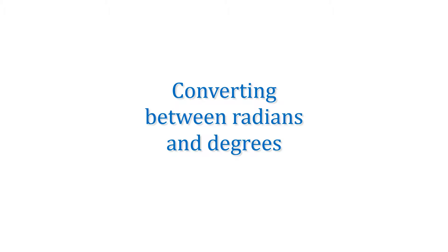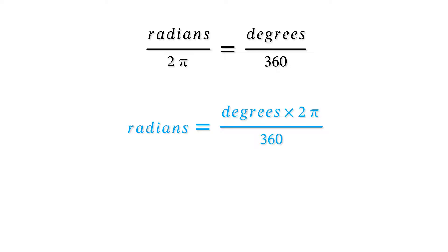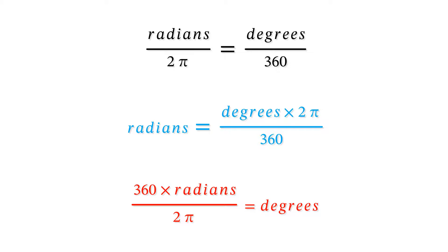Converting between radians and degrees: radians compared to 2 pi is the same as degrees compared to 360 for a circle. If we multiply both sides by 2 pi, we get radians equals degrees times 2 pi over 360, or degrees equals 360 times radians over 2 pi. The bottom two equations cancel down by two. It's worth remembering this, and that's how you work them out from the top.